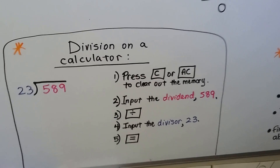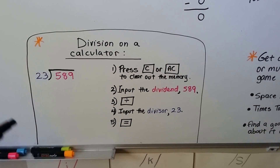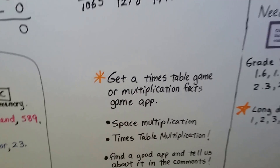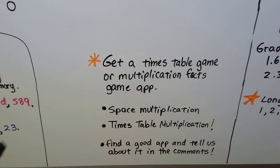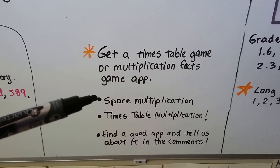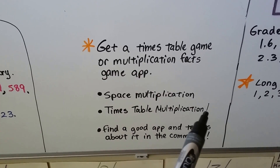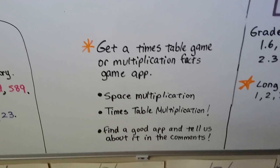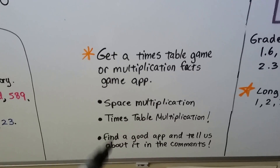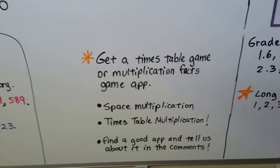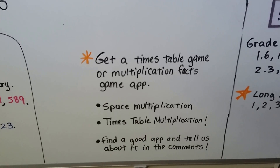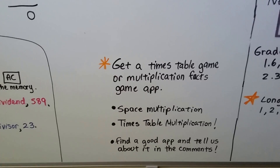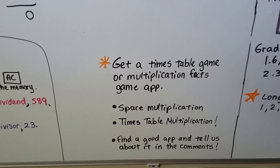My other advice: get a times table or multiplication facts game app. There's one called Space Multiplication and one called Times Table Multiplication. If you find a good one, write it in the comments to let others know. You can play it in your down time — on the bus, at lunch — and it will help you go faster on the test. You don't want to be stuck thinking 'what's six times seven?' during a timed test.